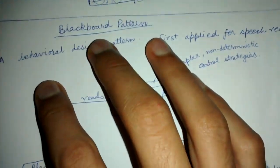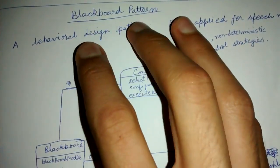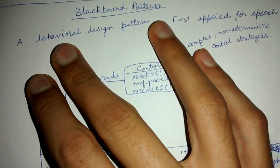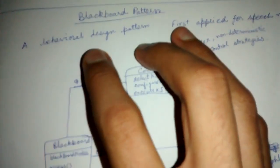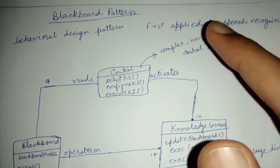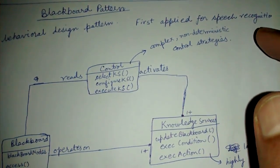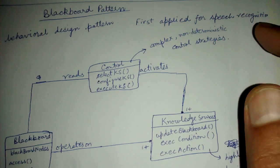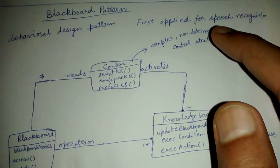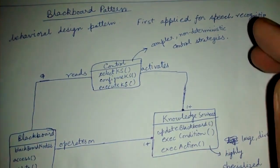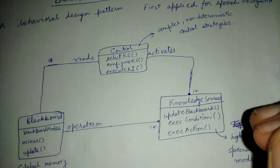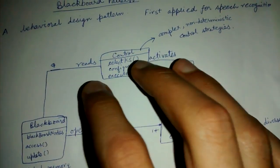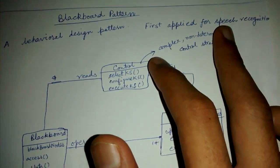Today we'll be very briefly looking at the blackboard pattern, which is a behavioral design pattern. It was first applied for speech recognition, that is recognizing what a person is speaking and converting that into text. In that field of computer science it was being used first.